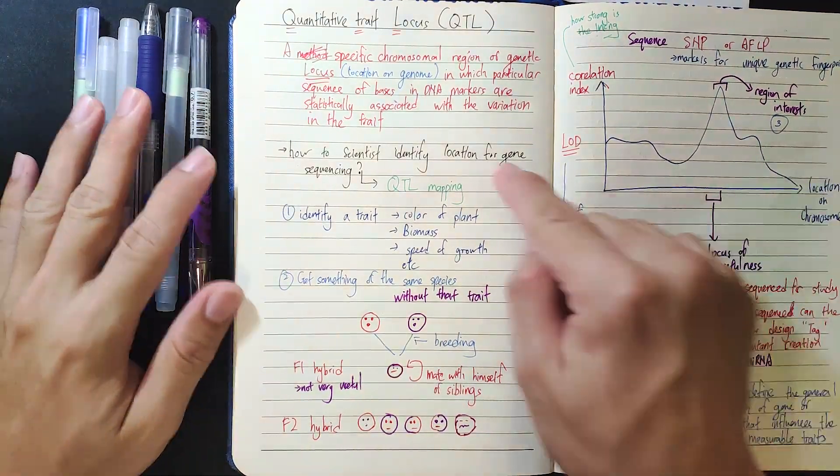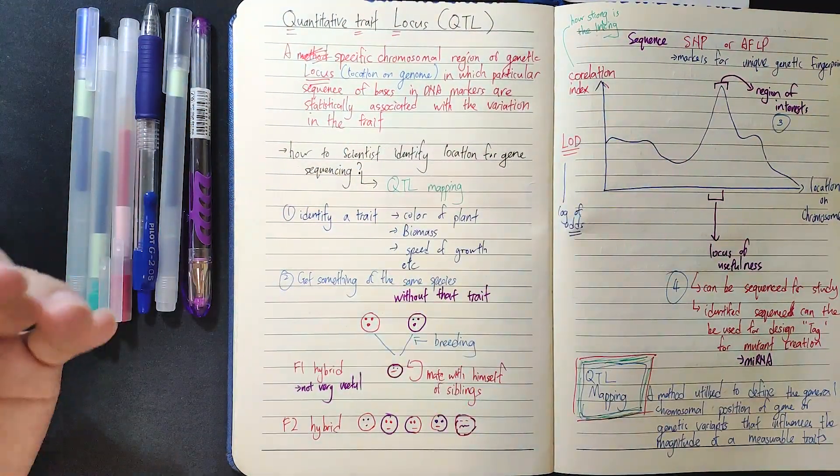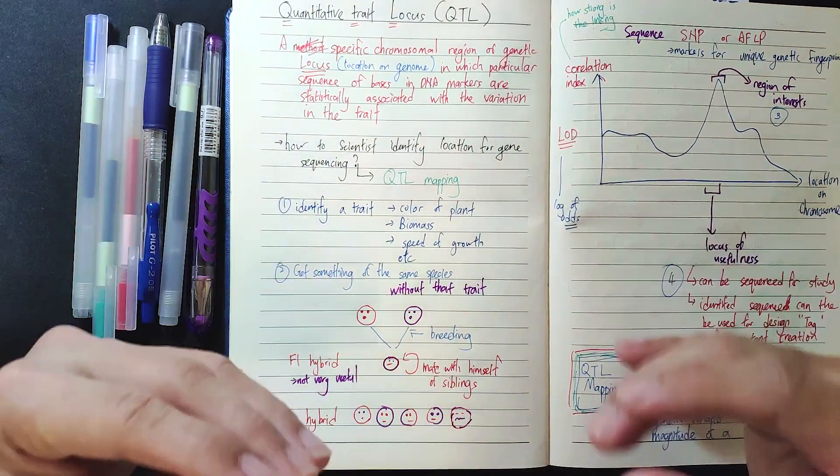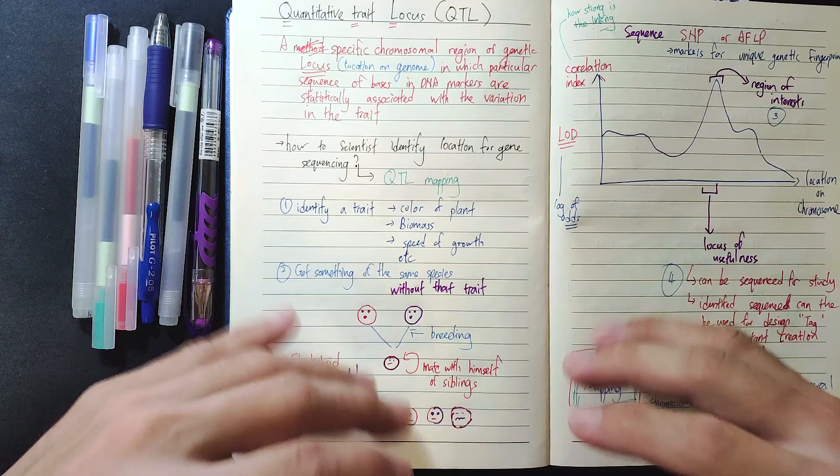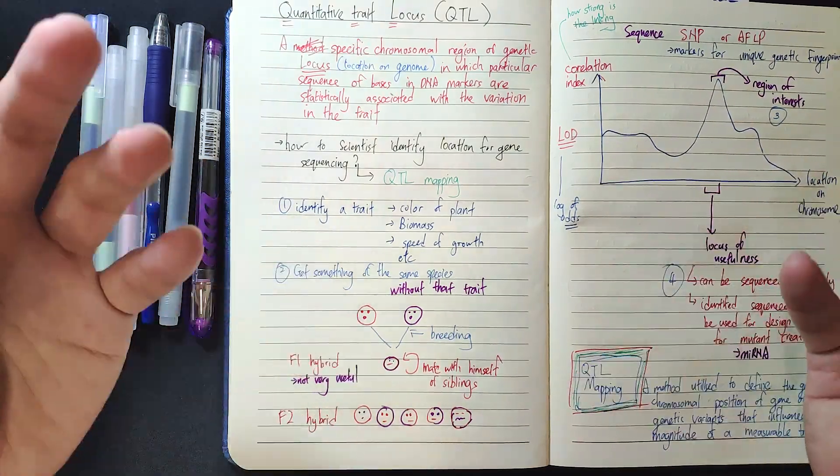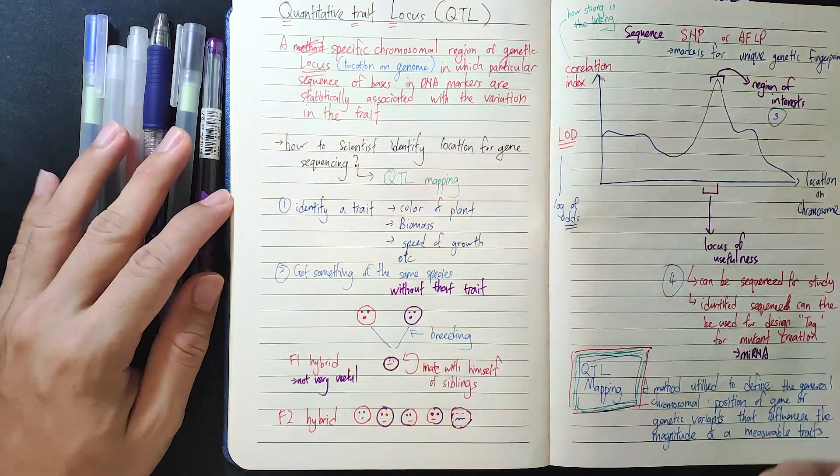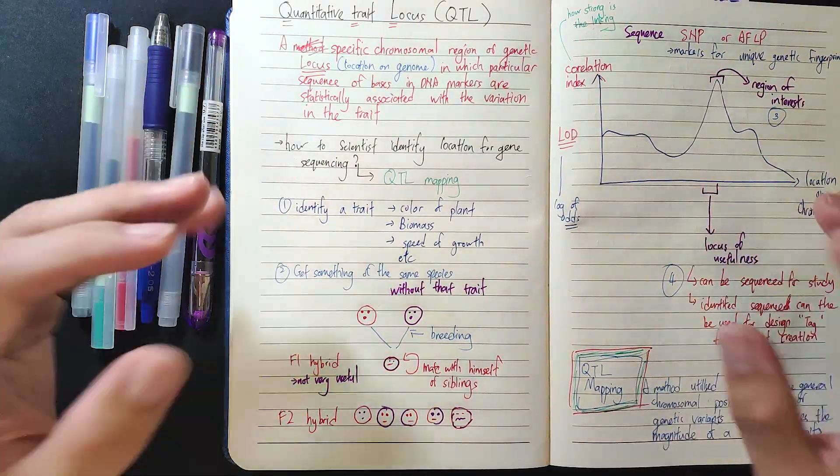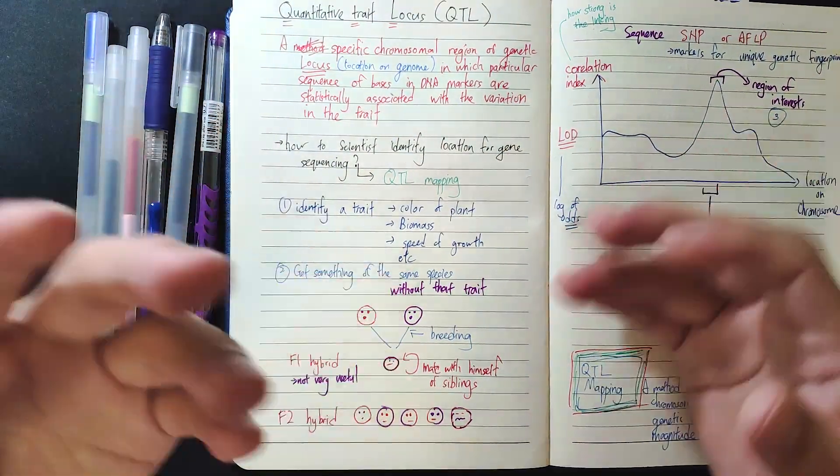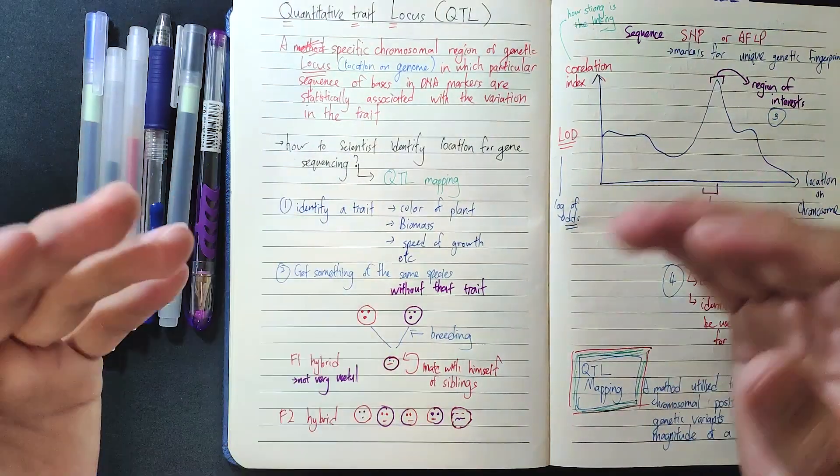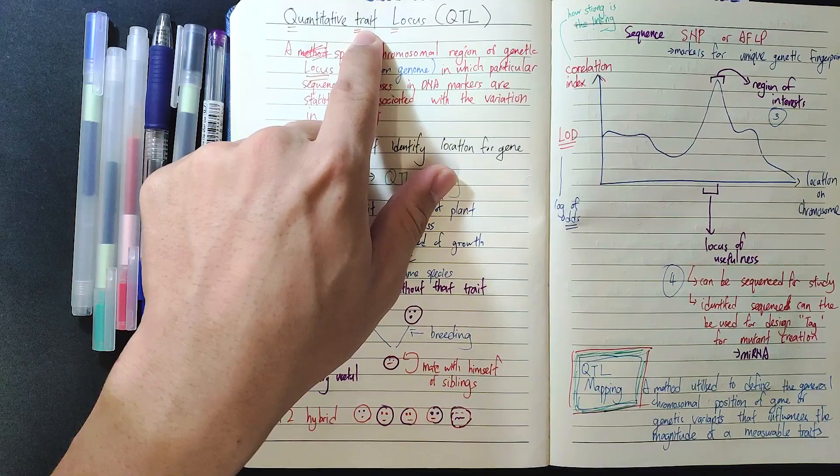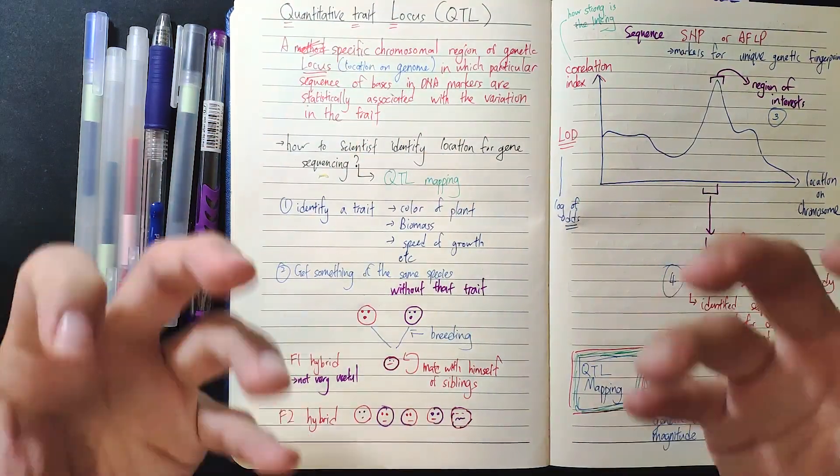Okay, so I'm just going to go through how scientists actually identify a single genetic location. First of all is identify a trait that you want to study. This could be the color of the plants, the biomass of the plants, like how big they are. Is it a bigger watermelon or smaller watermelon? How fast do they grow? So a trait that you want to study. A trap here - a trait refers to a phenotype, something you can observe.